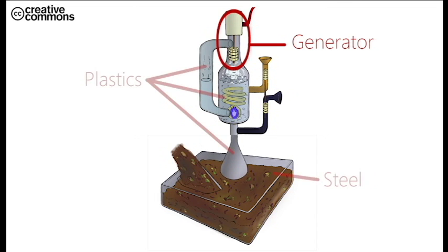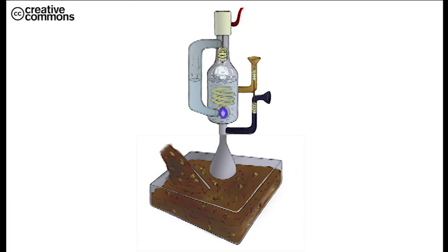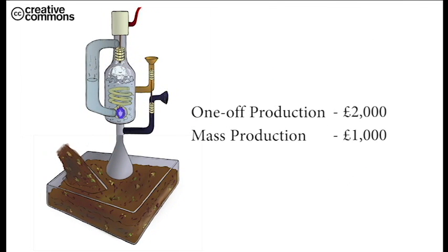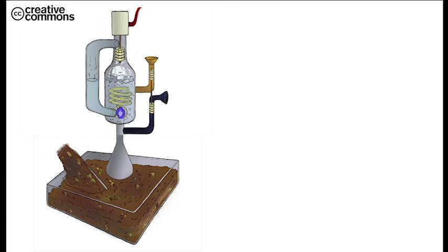The system will be mostly made out of rigid plastics and steel, and thus we estimate the cost of building this system one-off to be close to £2,000, and as low as £1,000 if we mass-produce. In terms of social and environmental viability,